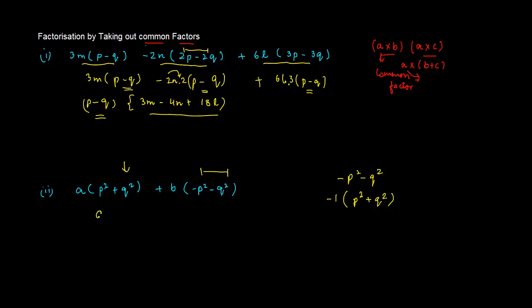So, we can also write this as A into P square plus Q square plus B into minus 1 times P square plus Q square.